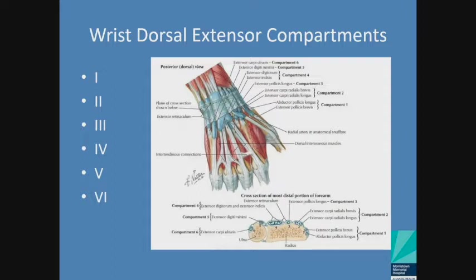Extensor compartment number one: your APL — abductor pollicis longus — and extensor pollicis brevis. These tendons are responsible for de Quervain's tenosynovitis on the radial aspect of the wrist. Compartment two: ECRL and ECRB, just ulnar to those. These tendons are responsible for intersection syndrome, another very common form of tendonitis in the wrist. Compartment three: extensor pollicis longus, which extends the thumb and is commonly injured with distal radius fractures, either acutely or chronically.